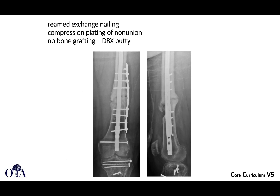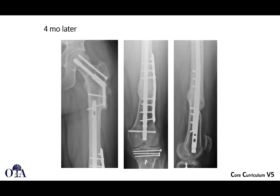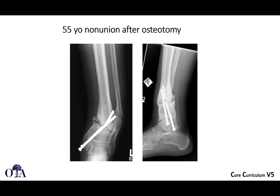This was treated with reamed exchange nailing of the retrograde femoral nail and then additional compression plating — almost a wave plate type design to accommodate around the attempted callus formation, and then compression with no autogenous bone grafting, just a demineralized bone matrix material. Four months later, you can see a combination of the exchange nailing, which presumably delivers some autogenous graft into the site, plus a lot of additional stability with that additional plate. Difficult to do when you have a nail in place, but as you can see, it can be done.